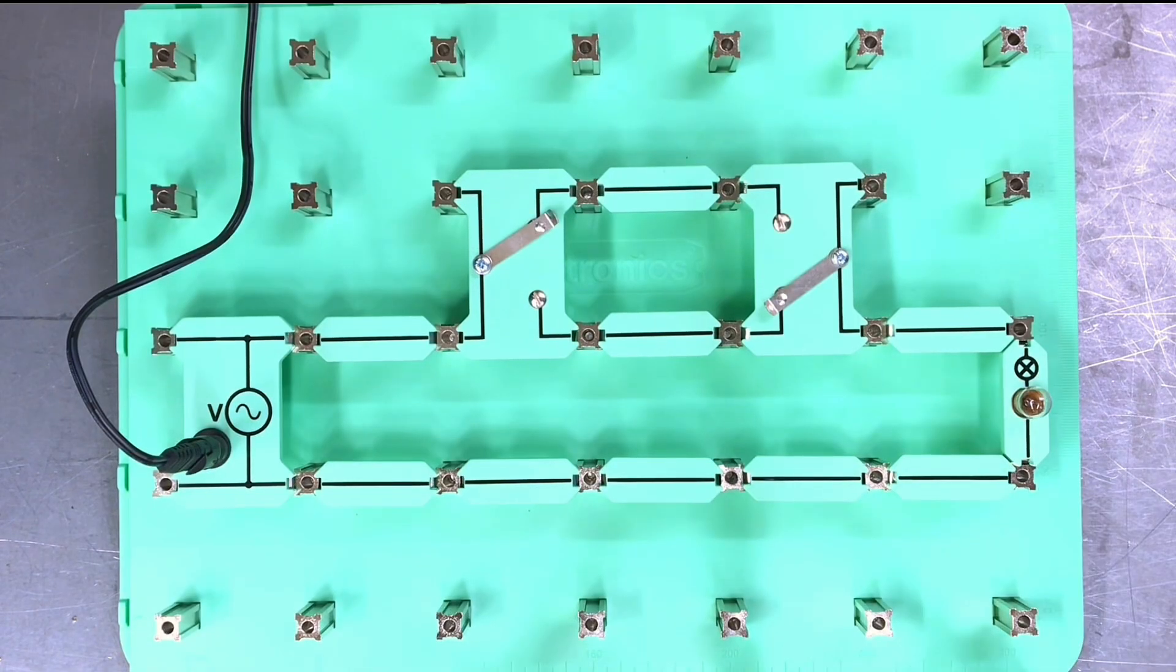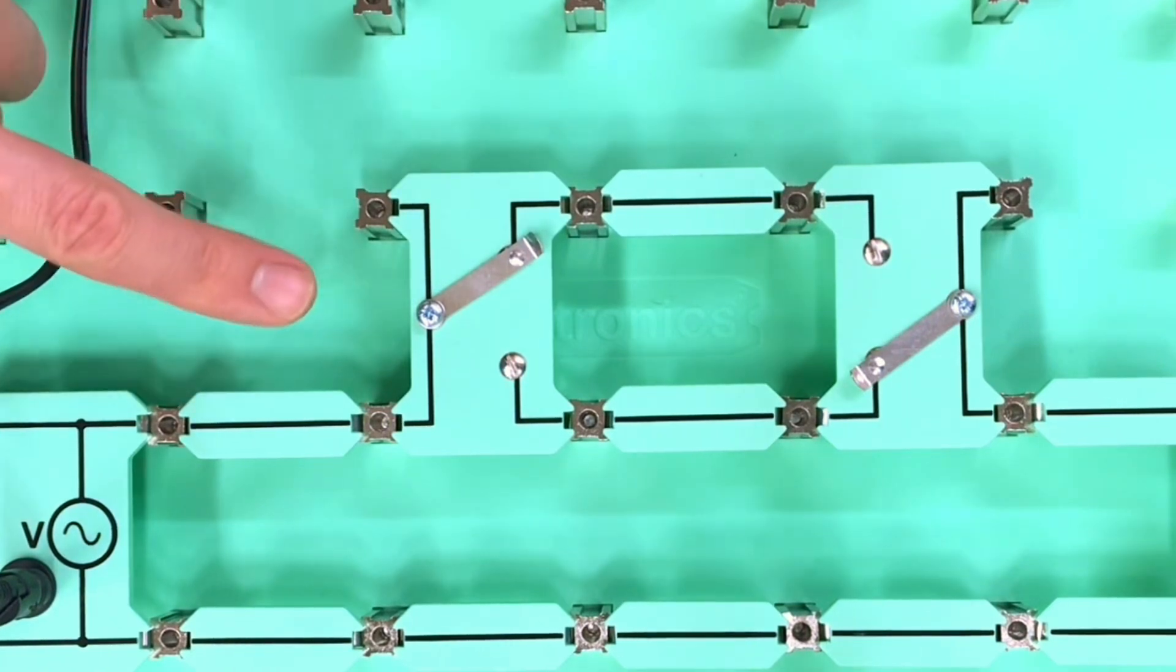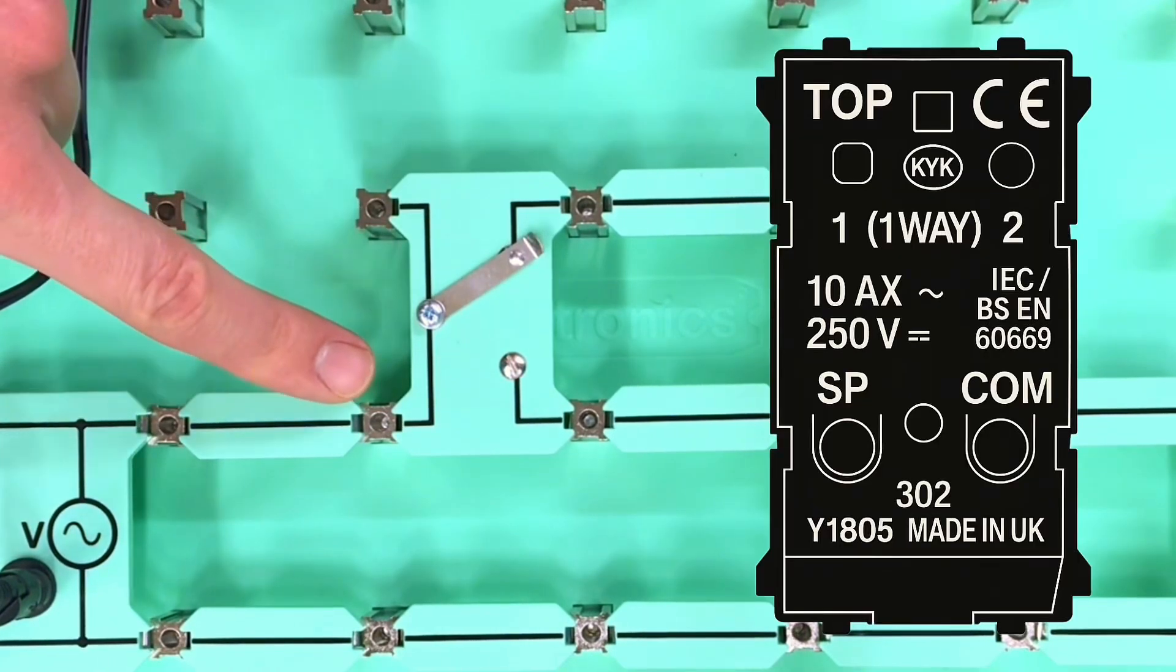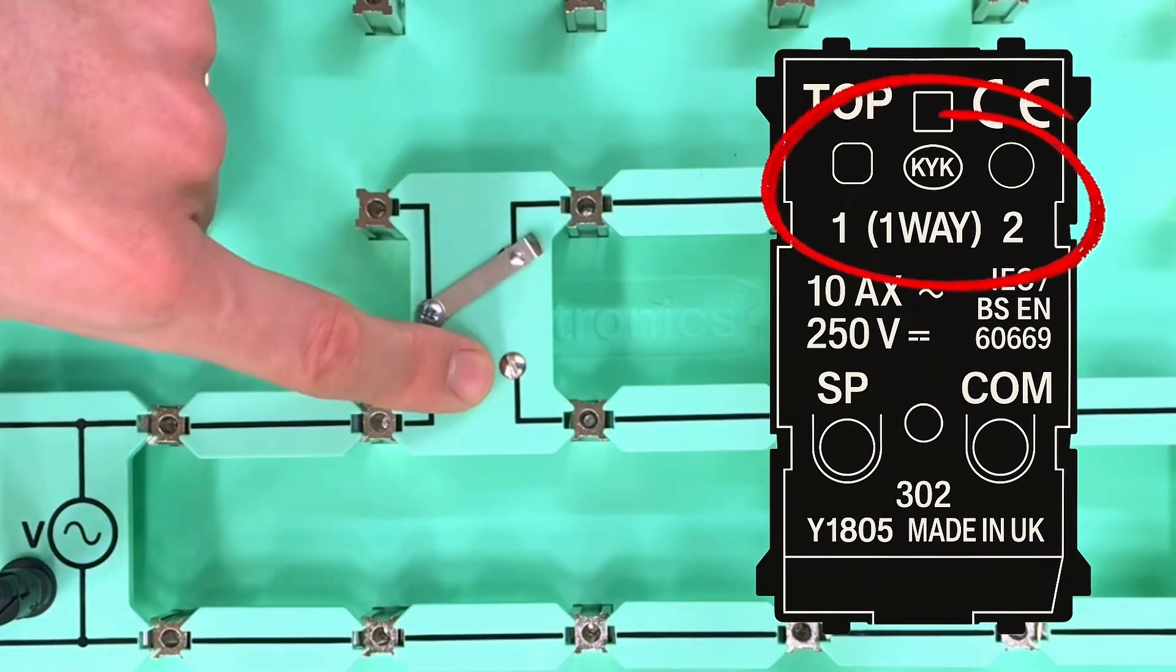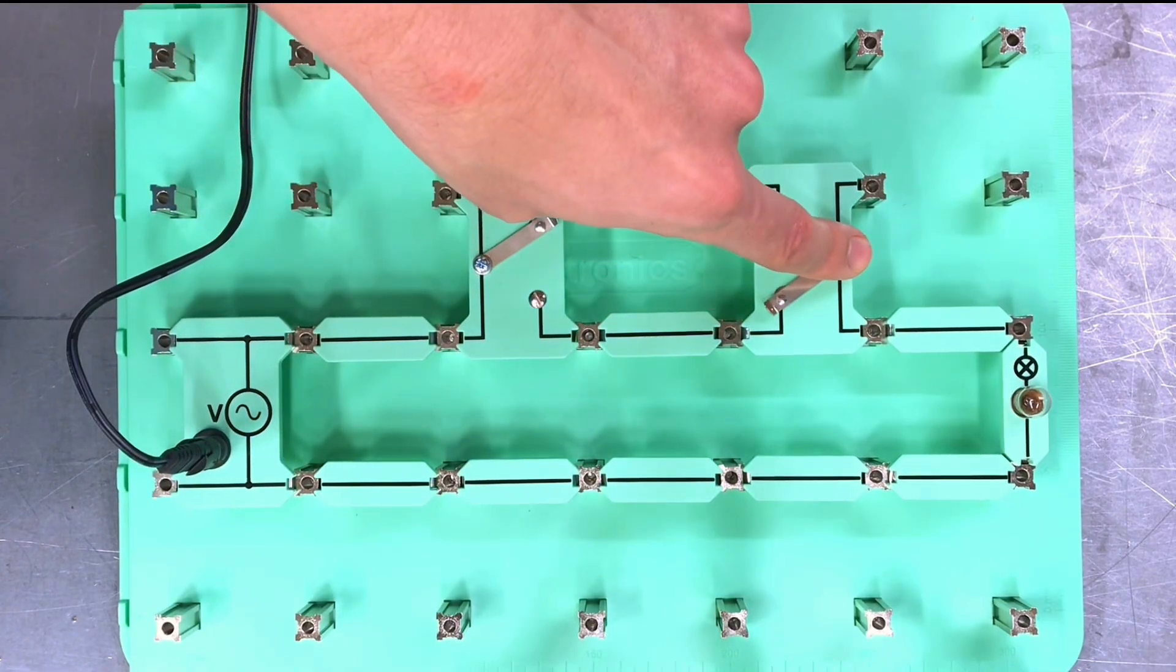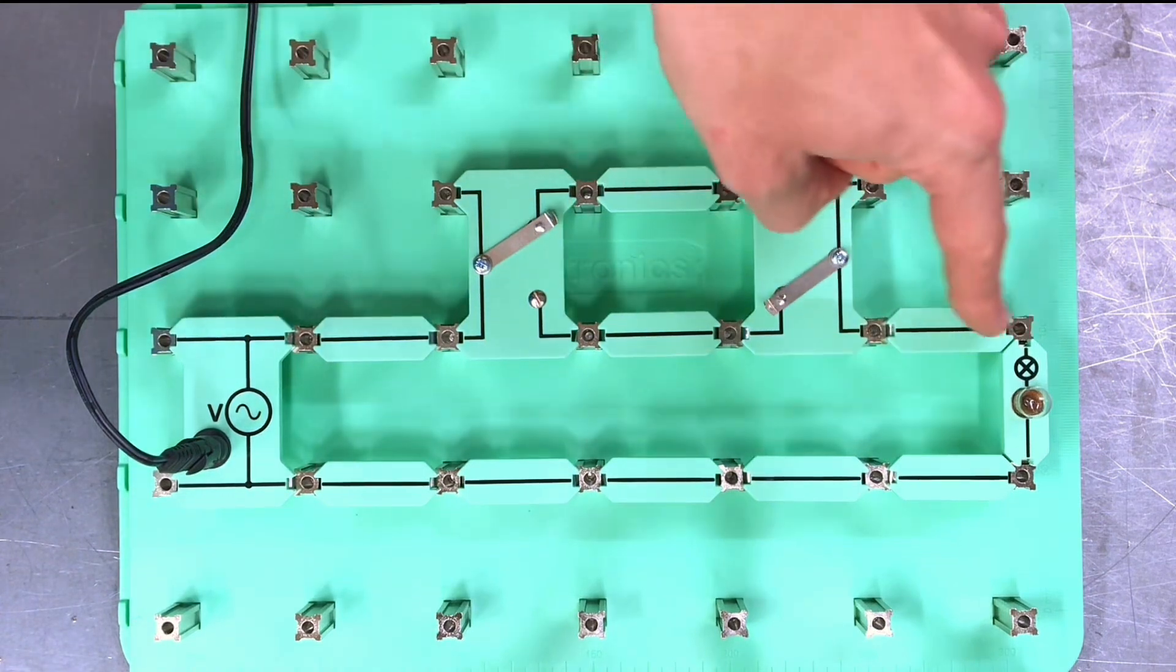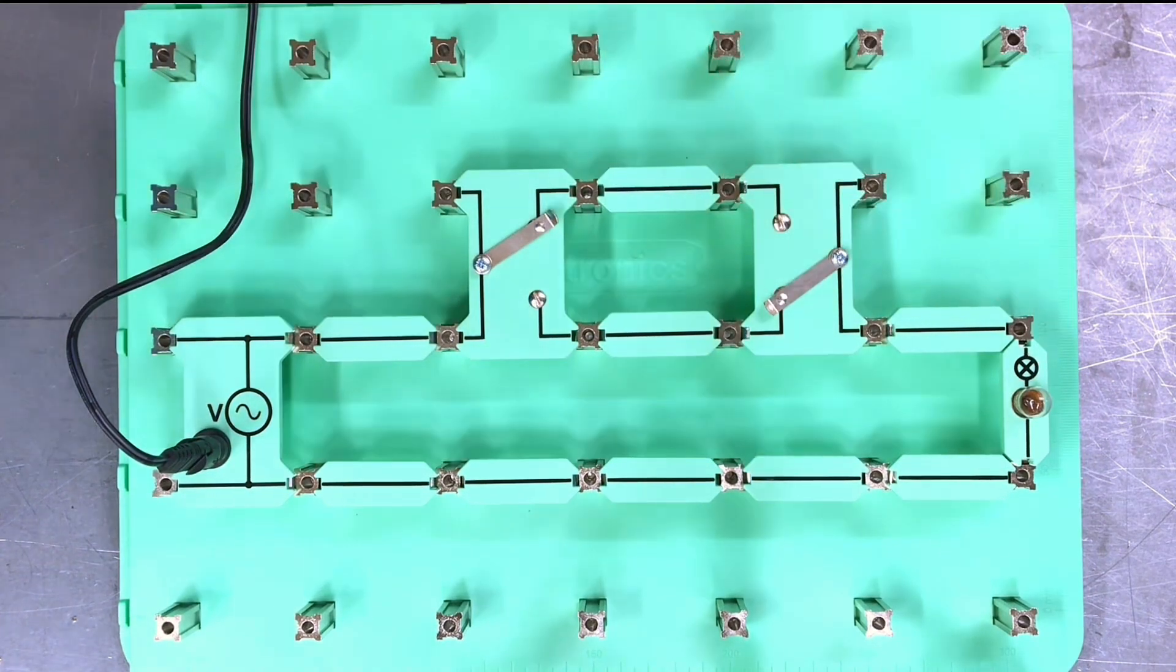When you look at these two-way switches, just to avoid any confusion here, this conductor that you can see here represents the common terminal, and then you've got L1 and L2, L1 and L2, and the common over on that side as well, which then goes off and takes the switch live to the lamp.